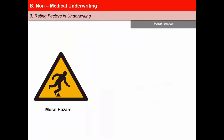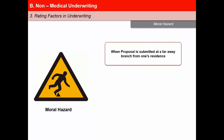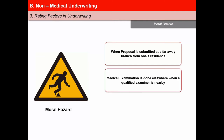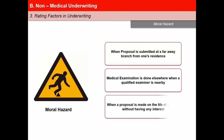Moral hazard exists when certain circumstances or characteristics of an individual's lifestyle, habits, reputation, financial situation, and mental health indicate that he or she may intentionally engage in actions that increase the risk. Factors suggesting moral hazard include: a proposal submitted at a branch far from the proposed insured's place of residence; a medical examination done elsewhere when a qualified examiner is available nearby; and a proposal made on the life of another person without a clear insurable interest, or when the nominee is not a close dependent. In each of these cases, an inquiry may be made.